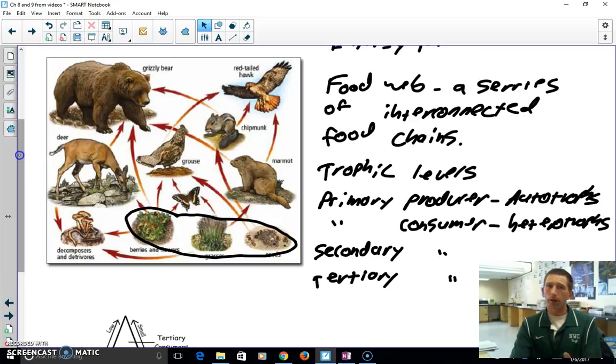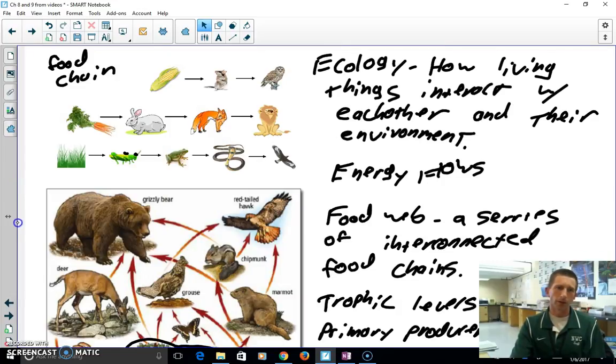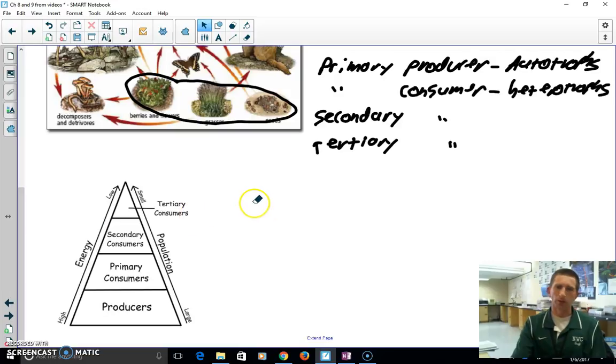Okay. So another way, remember, our big idea is energy flowing. So another way to look at energy flowing is with a trophic or an energy pyramid. So energy pyramid.